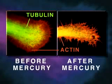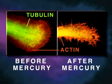Shown here is a neurite growth cone stained specifically for tubulin and actin, before and after mercury exposure. Note that the mercury has caused disintegration of tubulin microtubule structure.